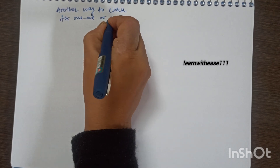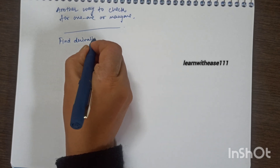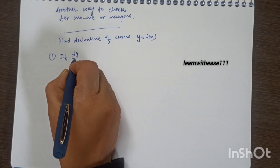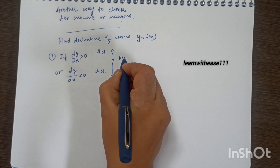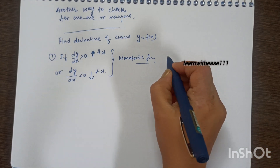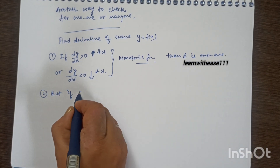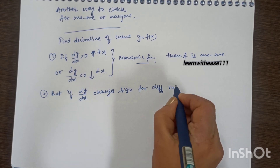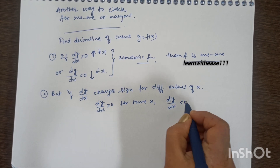There is another way to check one-one or many-one: the derivative approach. We take the derivative of y = f(x). If dy/dx keeps the same sign throughout the whole domain — always positive or always negative — then the function is monotonic and therefore one-one. If dy/dx keeps changing sign (positive for some x, negative for others), then the function is many-one.